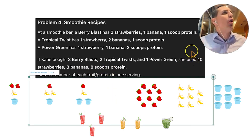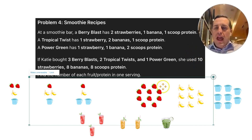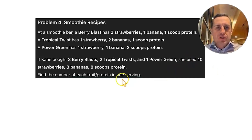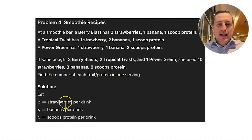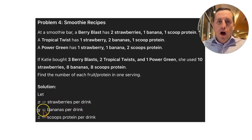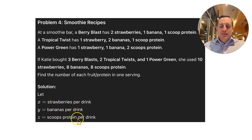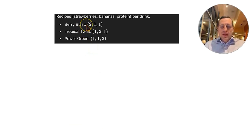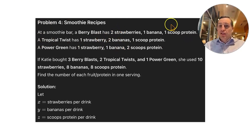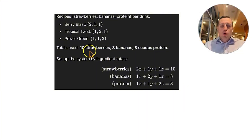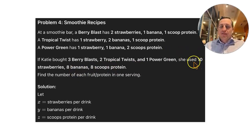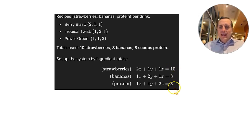The recipes give coefficients 2,1,1 for berry blast; 1,2,1 for tropical twist; and 1,1,2 for power green. The totals used were 10 strawberries, 8 bananas, and 8 scoops of protein. This sets up our three equations: 2X plus Y plus Z equals 10; X plus 2Y plus Z equals 8; X plus Y plus 2Z equals 8.